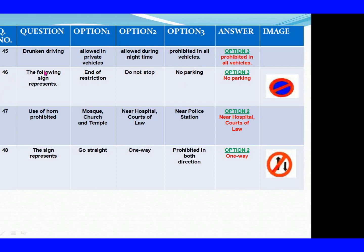Question 46: The following sign represents. Option 1: End of restriction. Option 2: Do not stop. Option 3: No parking. The right answer is Option 3: No parking. Question 47: Use of horn prohibited. Option 1: Near mosque, church and temple. Option 2: Near hospital, court of law. Option 3: Near police station. The right answer is Option 2: Near hospital, court of law.